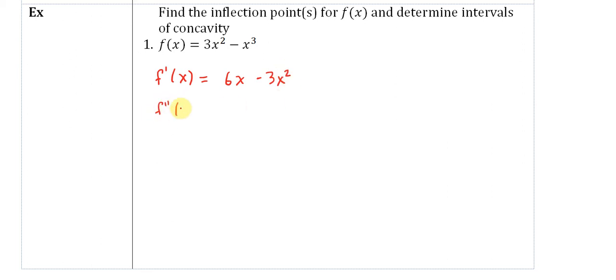The second derivative, f double prime of x, would be equal to 6 minus 6x. For intervals of concavity, if f double prime is positive, then f is concave up. And if f double prime is negative, then f is concave down.